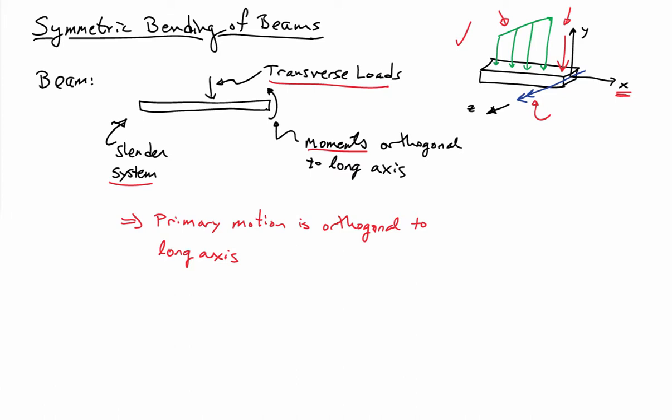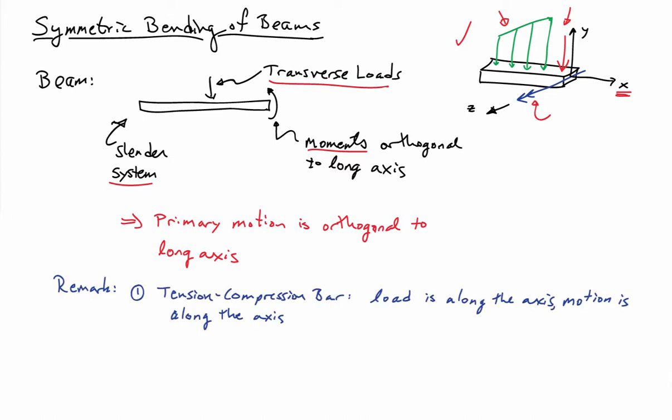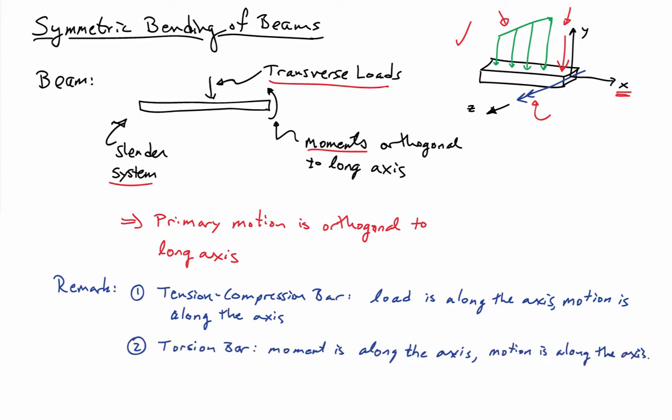The primary motion in these cases is going to be orthogonal to the long axis — that's motion in the y-direction, which are the deflections. This is different from tension-compression bars, where the load and motion are along the long axis. Likewise, for the torsion bar, we had a moment along the long axis and rotation along the axis. With beams, the motion is entirely transverse to the long axis.